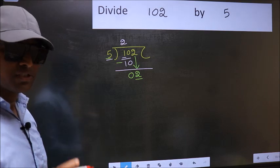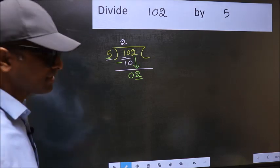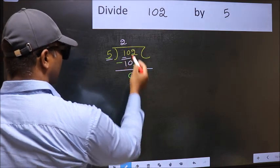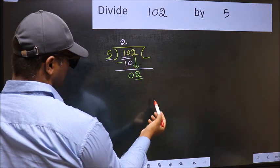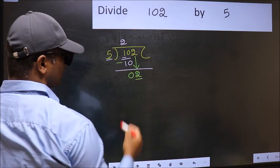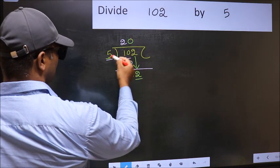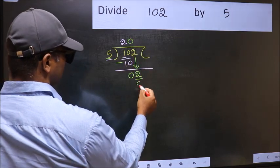Instead, what you should think of doing is: what number should we write here? If I take 1, I will get 5, but 5 is larger than 2. So what we should do is, we should take 0. So 5 into 0, 0.